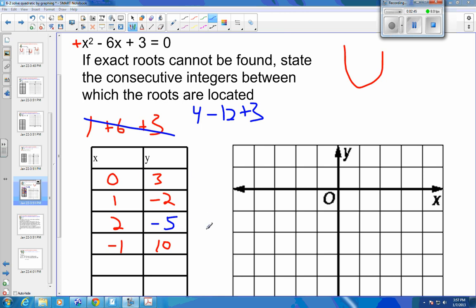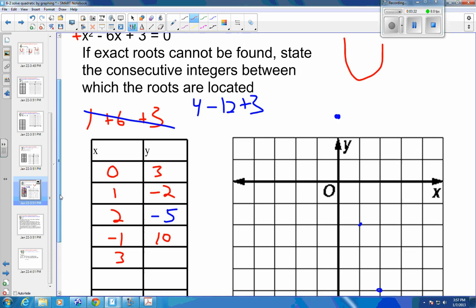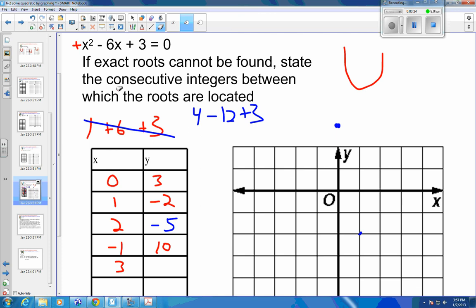Okay, so let me plot these points and see what I have so far. So 0, 3 is right here, off my graph again. 1, negative 2 is here. 2, negative 5, I need to come down a little bit, so this is 2, negative 5. And then at negative 1, I'm all the way up to 10, so I'm not going to graph that one. And let me see what happens when I get to 3 here. We're starting to get closer together, so I know that my minimum is going to be over here somewhere.